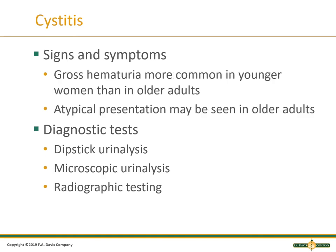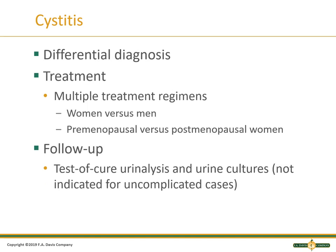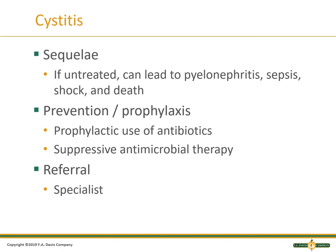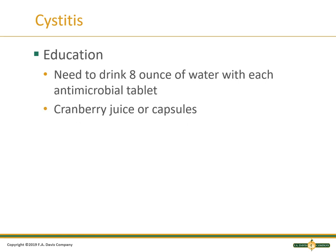Signs and symptoms: gross hematuria is more common in younger women than older adults; increased vasculature can be irritating. Atypical presentation can occur in older women. Start with your dipstick, always send a microscopic urinalysis, do a urine culture to see if there's an infection, and then radiographic testing. Treatment differs for menopausal versus postmenopausal women and men. The urinalysis and urine culture will help guide your treatment plan with sensitivity results. If untreated, you can have pyelonephritis — it travels up into the kidneys — then sepsis, urosepsis, shock, and death. Prevention and prophylaxis: use of antibiotics with suppressive antimicrobial therapy. If they have a history of it and the urine dipstick is positive while waiting for the culture, you're not necessarily wrong to give antibiotic therapy. Refer to the specialist, and educate: drink water, cranberry juice capsules, stay hydrated.